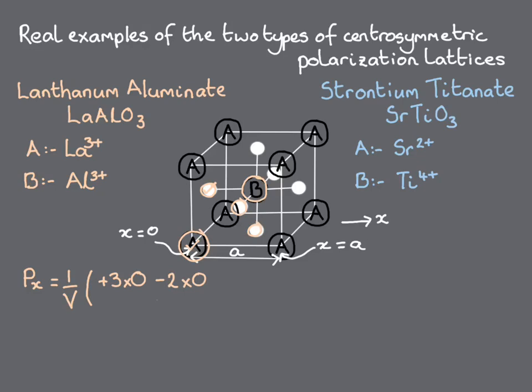3 × 0, + 2 × 0, from the A-site and the oxygen in the x = 0 plane, -2 × a/2 twice for the remaining two oxygens, + 3 × a/2 for the B-site ion, all times the electronic charge. This reduces to -1/2 × e × a/V, or -1/2 polarization quantum. Our lanthanum aluminate has the polarization lattice type that contains the half-quantums and doesn't contain zero.